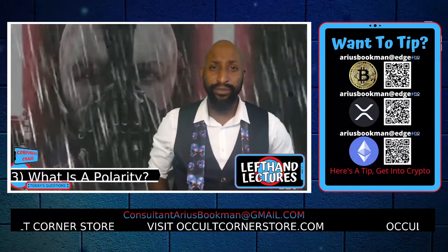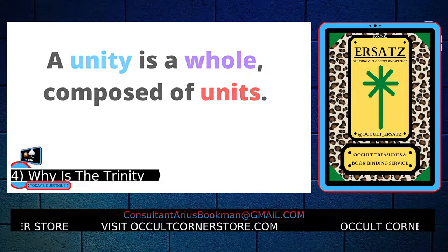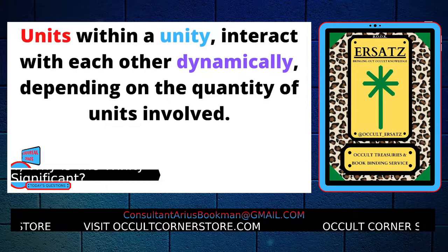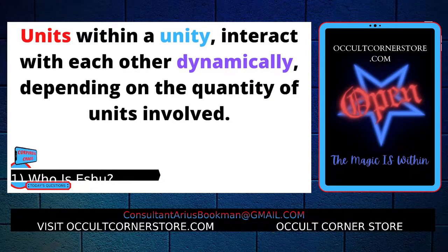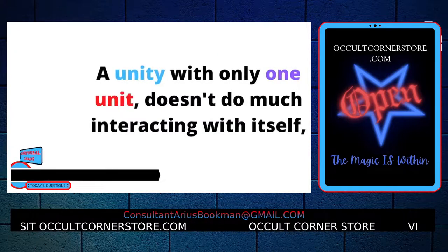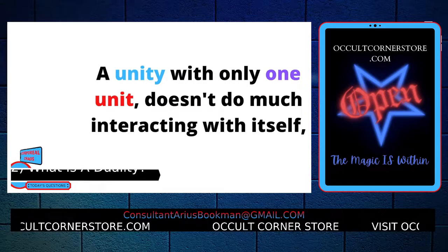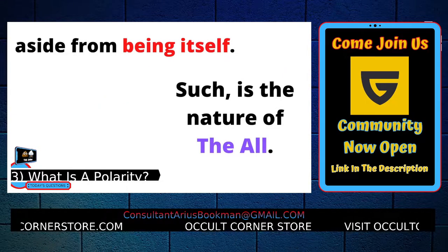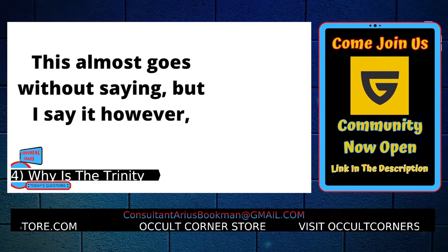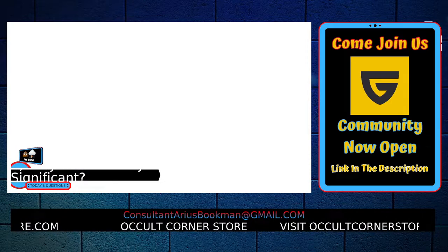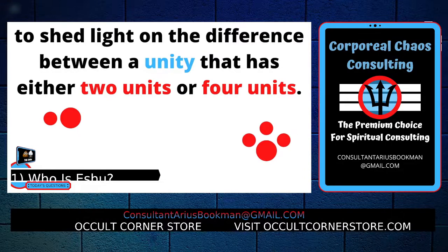Said differently, a unity is a whole composed of units. Units within a unity interact with each other dynamically depending on the quantity of units involved. A unity with only one unit doesn't do much interacting with itself, aside from being itself. Such is the nature of the all — I say it, however, to shed light on the difference between a unity that has either two units or four units.